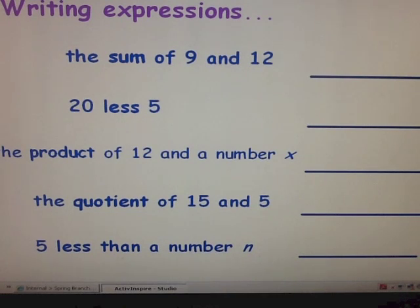Now that we've talked about different words that mean to add, subtract, multiply, and divide, let's write some expressions. These are expressions because nowhere does it talk about equaling a number. First example, the sum of 9 and 12. What is your clue word? Sum means to add. We're going to add 9 and 12. So our expression is 9 plus 12.